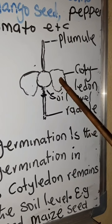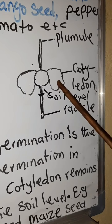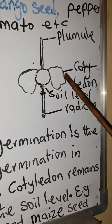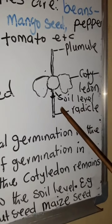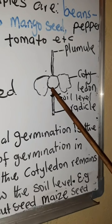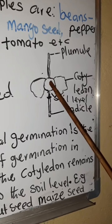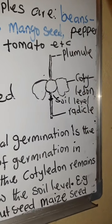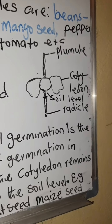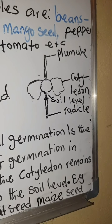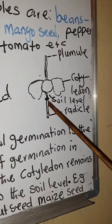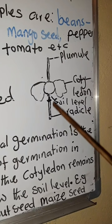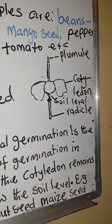Whenever you see the plant of a germinating seed, you find out that it divides into two parts. The cotyledon is out and the plumule shoots out — it will turn into leaves. The radicle grows down into the soil and becomes a root.